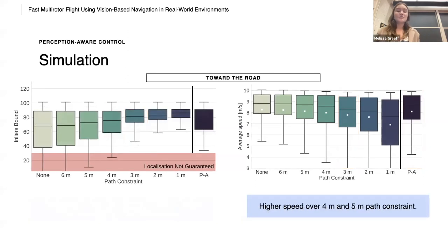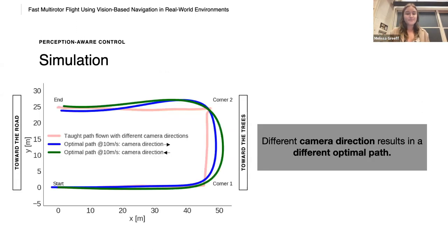So we see the optimal path at our desired speed of 10 meters per second. When the camera is pointing towards the trees in blue and towards the road in green. And this is with our perception aware constraint. And this is kind of the point, is that a different camera direction results in a different optimal path.